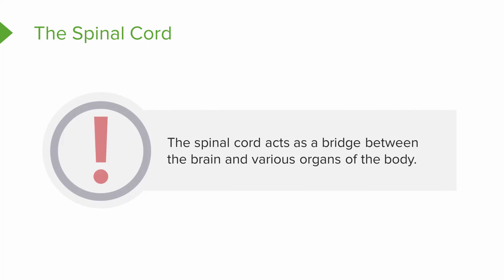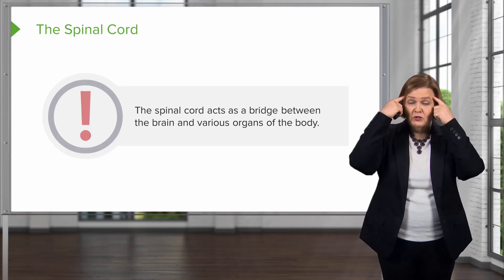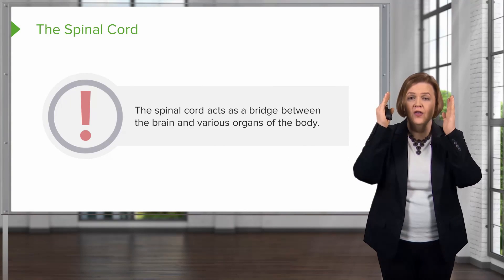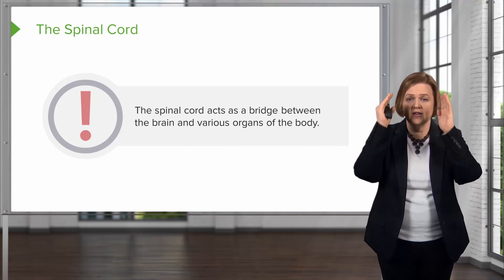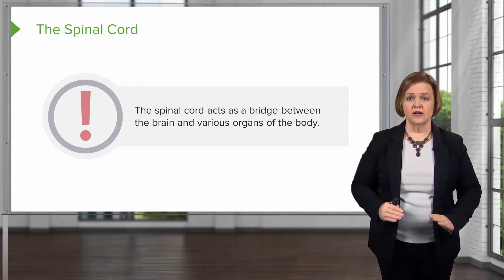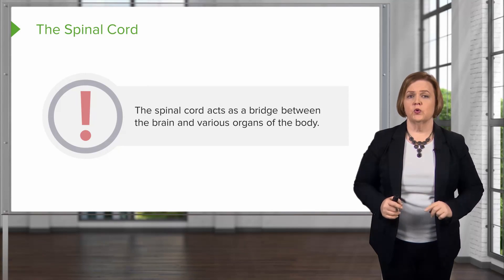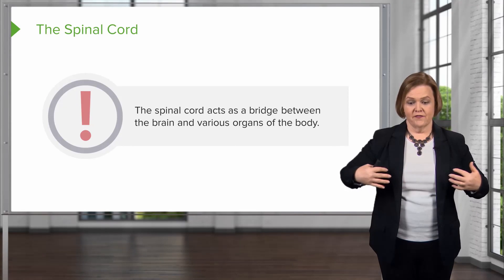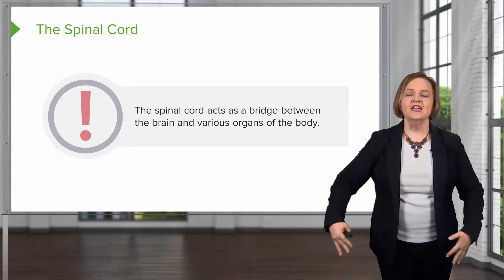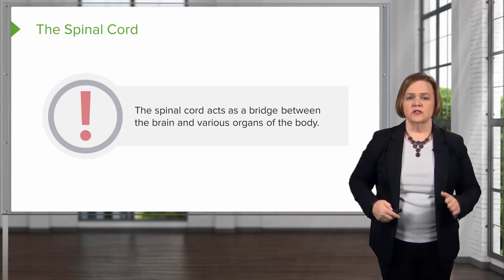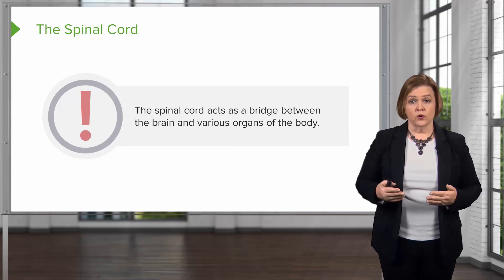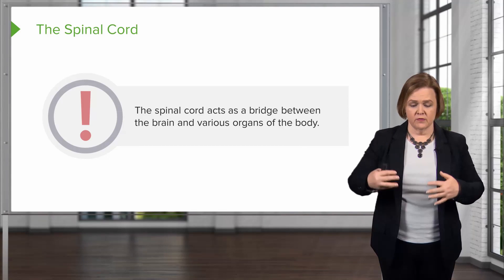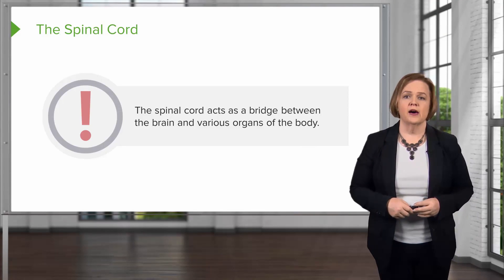The spinal cord is kind of a bridge between the brain and the other organs of the body. This is what controls the rest of your body. We call it the central nervous system because it goes right down the center of your body. The brain and spinal cord make the central nervous system. All the nerves that come off and go out to the very ends of the body — that's the peripheral nervous system. But it's the spinal cord that acts as the bridge between the central nervous system and the various other organs of the body.